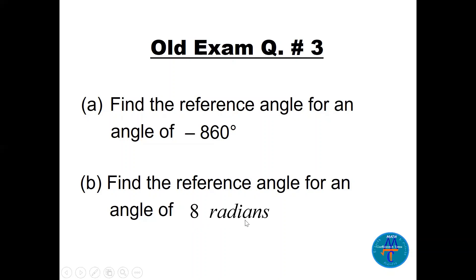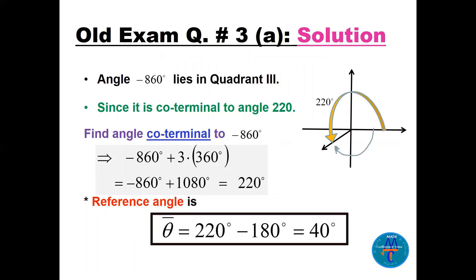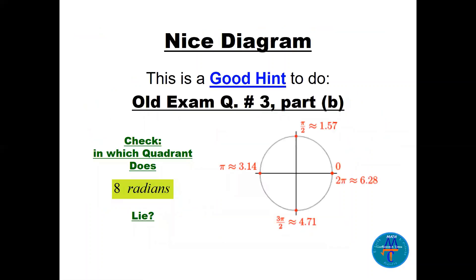Next, let's find reference angles. For -860°: negative angles require finding a coterminal angle. We add 3×360° = 1080°, giving -860° + 1080° = 220°. Since 220° lies in Quadrant 3, the reference angle is 220° - 180° = 40°.